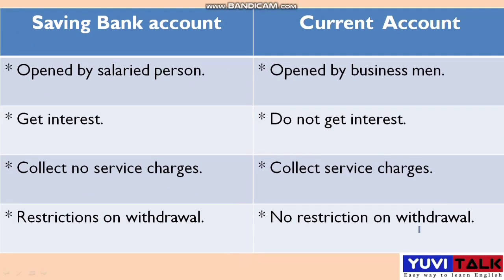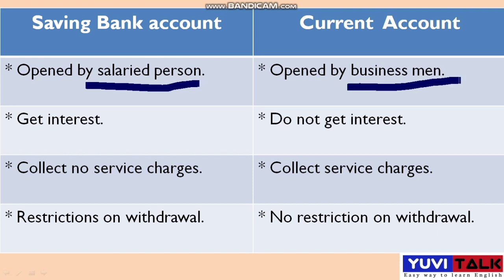The next question is: what is the difference between a Saving Bank Account and a Current Account? The first difference is that a Saving Bank Account is opened by salaried persons, while a Current Account is opened by businessmen. The second difference is that a Saving Bank Account earns interest, while a Current Account does not earn any interest.